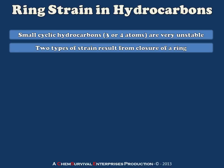Two types of strain result when you have the closure of a small ring like this, and they add up to form what we call ring strain.